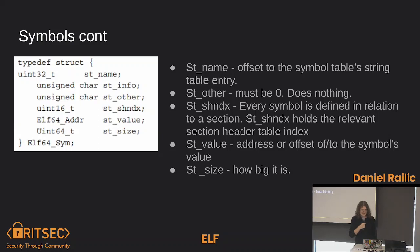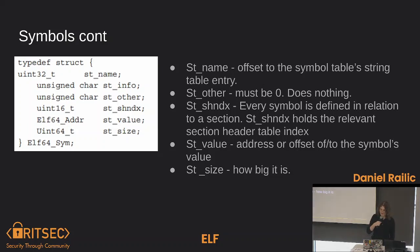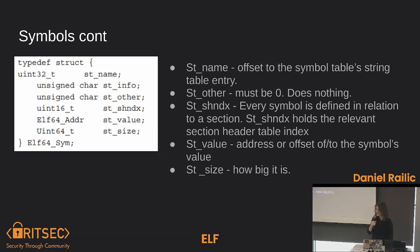Here's the struct of a symbol — now looking at an ELF64 example. The symbol tables are going to have arrays of these structs. It's got: st_name — just the offset to the symbol table string table entry, so it goes to the string table and grabs the name from there. It has 'other' — which must be zero and does nothing. It just exists. They said they might need it for later, but it's been like 20 years and they haven't used it for anything.